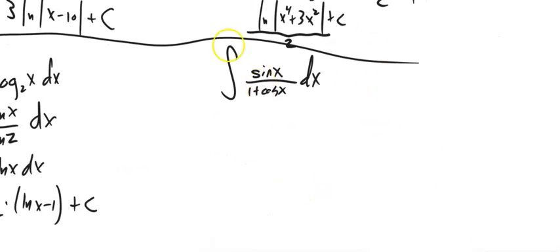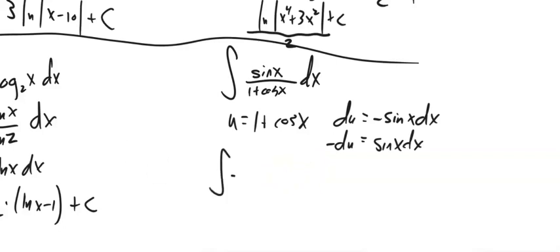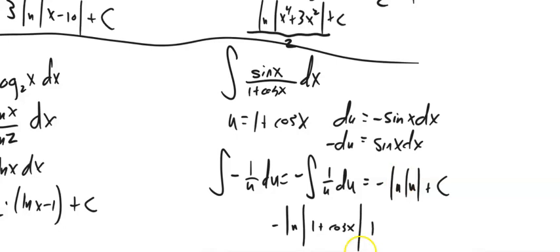Last one — a lot like the previous fraction examples. Let u equal the denominator, 1 plus cos(x). The derivative of that is negative sin(x), so we have negative du equals sin(x)dx. Substituting in gives negative times the integral of 1/u du, and taking the negative out gives negative ln|u| plus C. Substituting back: negative ln|1 plus cos(x)| plus C.